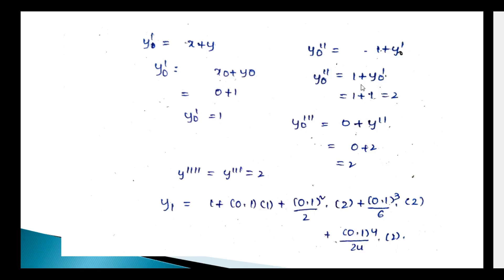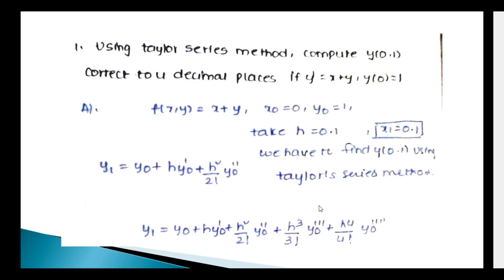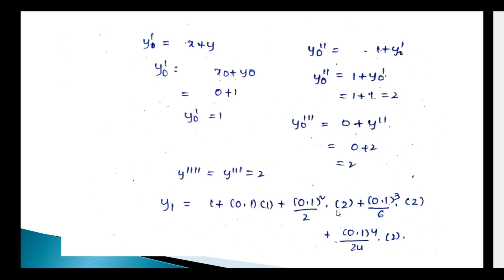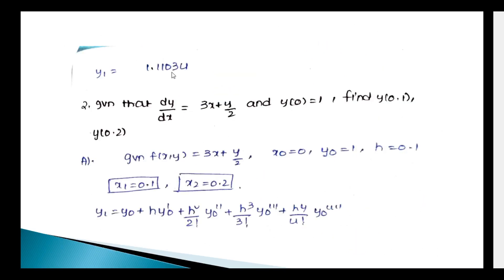Next, y₀''' = 0 + y₀'' = 0 + 2 = 2. The 4th derivative is also equal to 2. Now substituting into the formula: y₁ = 1 + 0.1×1 + (0.1²/2)×2 + (0.1³/6)×2 + (0.1⁴/24)×2. Solving, y₁ = 1.11034.